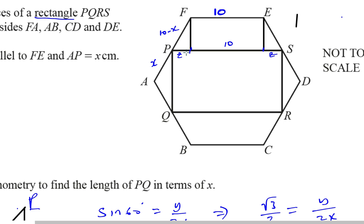I know that FP is 10 minus x, the angle at the rectangle corner is 90 degrees, and drawing a line across parallel to FE gives 60 degrees at that corner — because the interior angle is 120, and half of that split is 60. So I can find Z in terms of x using trigonometry on this right-angle triangle with a 60-degree angle.